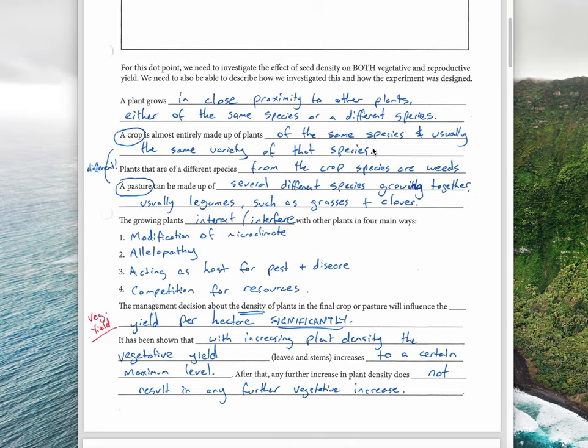Plants that are of a different species from a crop are considered weeds. However, a pasture is made up of several different species growing together, usually legumes such as grasses and clover. That's used for animal feed, while a crop is generally harvested for human consumption in most cases.